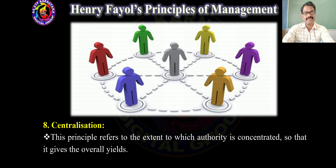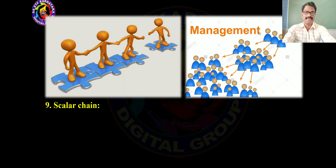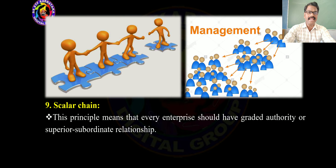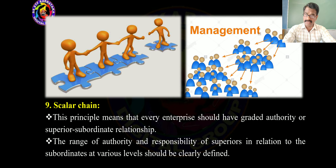Centralization: This principle refers to the extent to which authority is concentrated so that it gives the overall yields. Scalar Chain: This principle means that every enterprise should have a graded authority or superior-subordinate relationship. The range of authority and responsibility of superiors in relation to subordinates at various levels should be clearly defined.